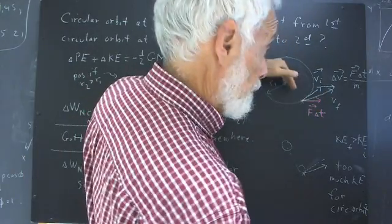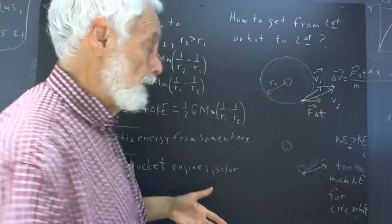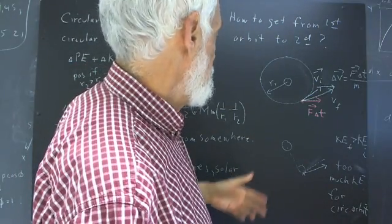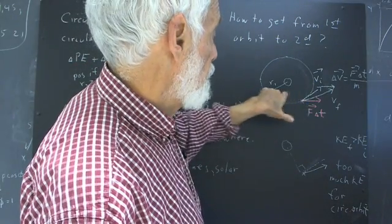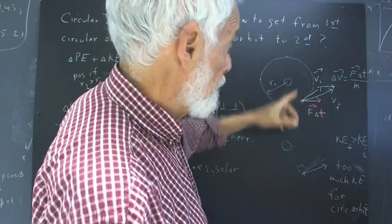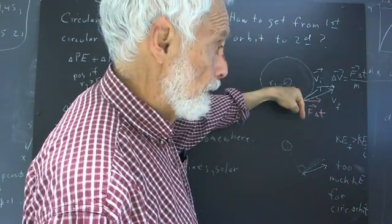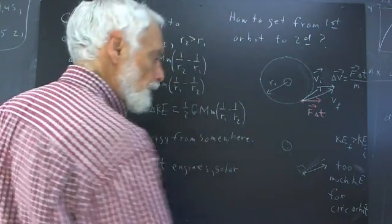So the velocity is perpendicular to the gravitational force. The gravitational force, therefore, is doing no work on the particle because its motion is perpendicular to the force. That's no longer the case here.